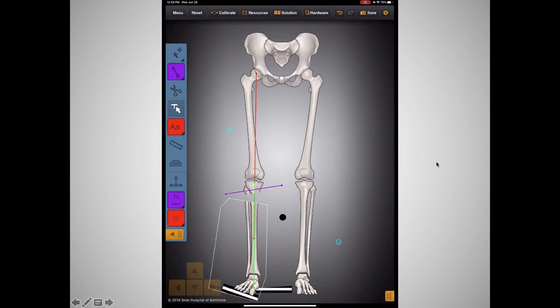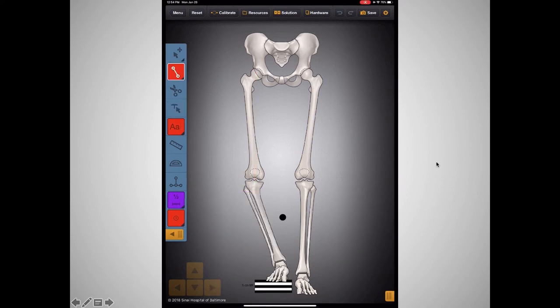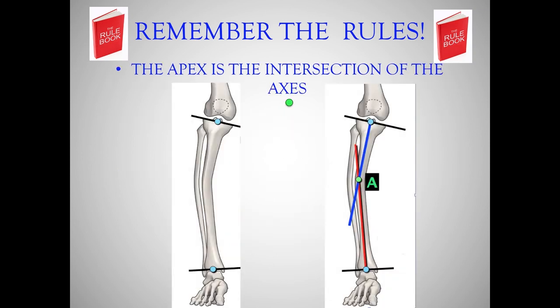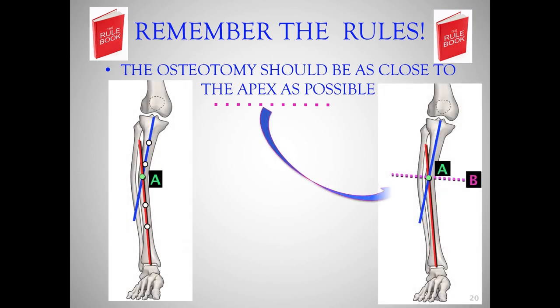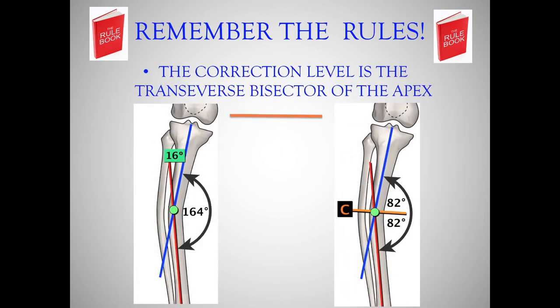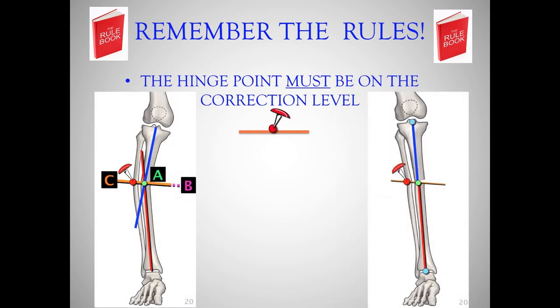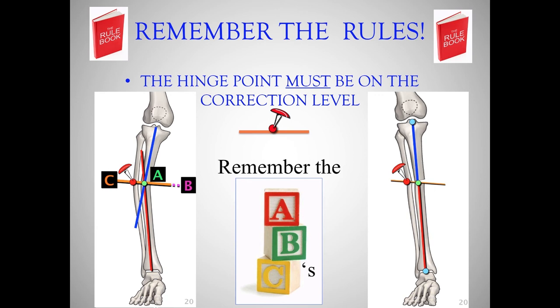Thank you. Remember the rules: the apex is the intersection of the axes; the osteotomy should be as close to the apex as possible; the correction level is a transverse bisector of the apex; and your hinge point must be on the correction level line. With these rules you'll never go wrong and you'll have perfect corrections. Just remember the ABCs. Thank you.